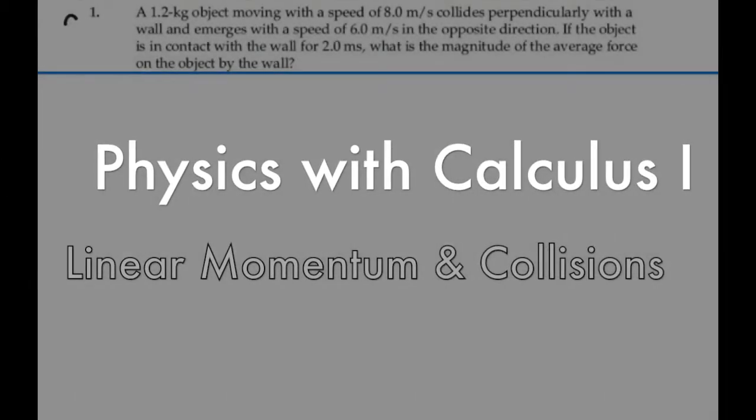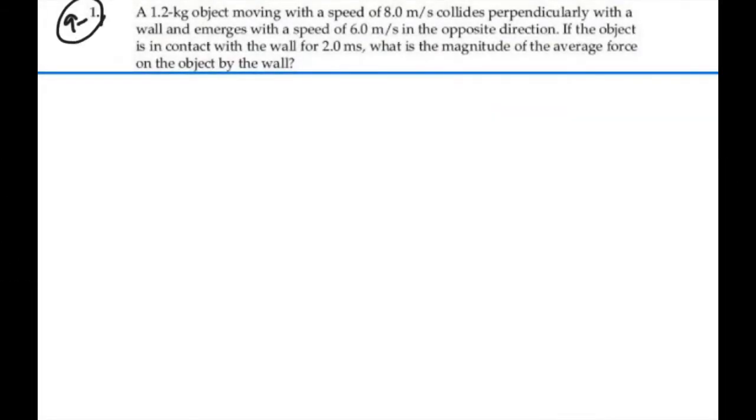Here's problem 9.1. A 1.2 kilogram object moving with a speed of 8 meters per second collides perpendicularly with a wall and emerges with a speed of 6 meters per second in the opposite direction. If the object is in contact with the wall for 2 milliseconds, what is the magnitude of the average force on the object by the wall?